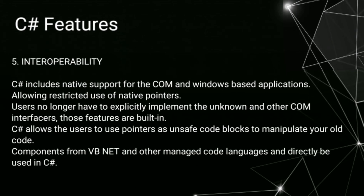5. Interoperability. C sharp includes native support for COM and Windows-based applications, allowing restricted use of native pointers. Users no longer have to explicitly implement the IUnknown and other COM interfaces — those features are built-in. C sharp allows users to use pointers as unsafe code blocks to manipulate old code. Components from VB.NET and other managed code languages can directly be used in C sharp.